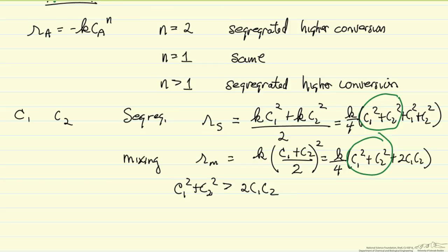But if we have the second order reaction like we're looking at here, then C1 squared plus C2 squared is greater than 2 C1 C2. And this would then mean we have the higher rate for segregated flow. And the easiest way to understand this is just put some numbers in. For example, if this was 5 squared and this is 2 squared, that's 29. And the right side, 2 times 5 times 2 is 20. And so we have a higher rate for the case of segregated flow.